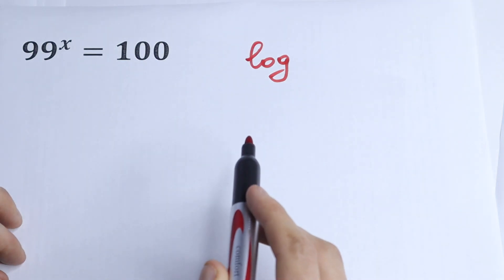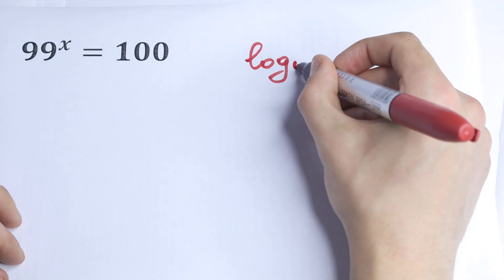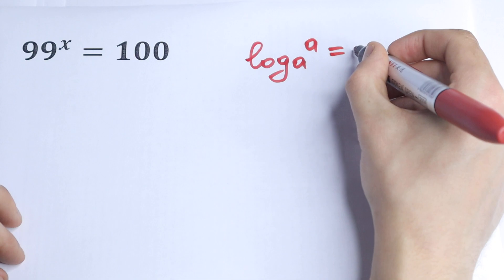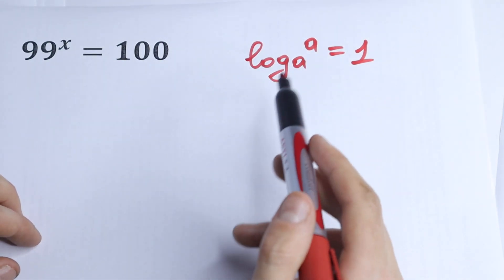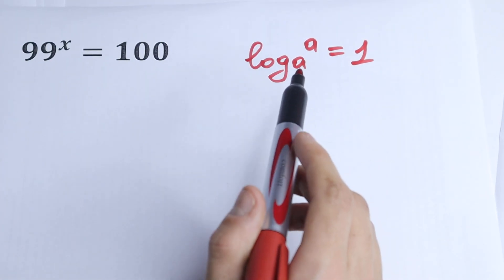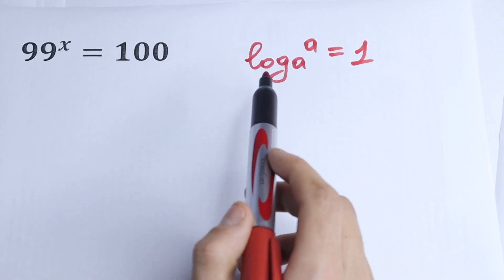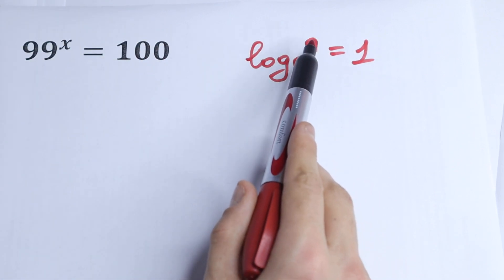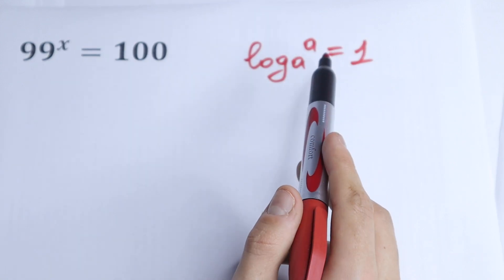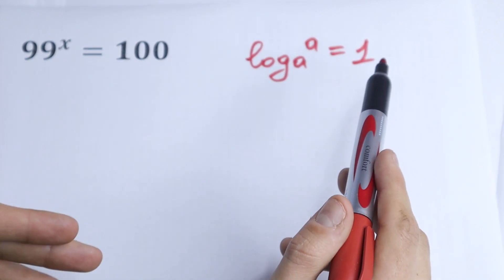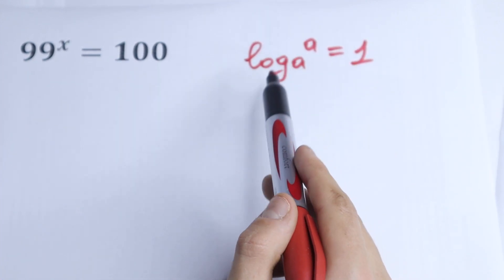For example, log base a of a would be equal to 1. This is the thing that we really need right here. The first rule: if we have the same base and the same number, it would be equal to 1. Log base 3 of 3 equals 1, and the next.